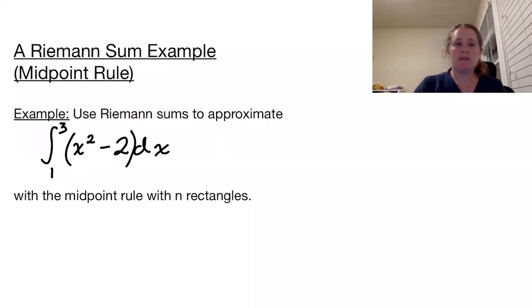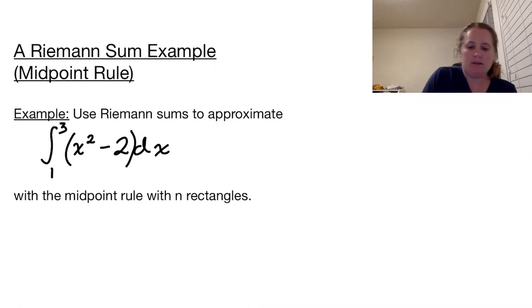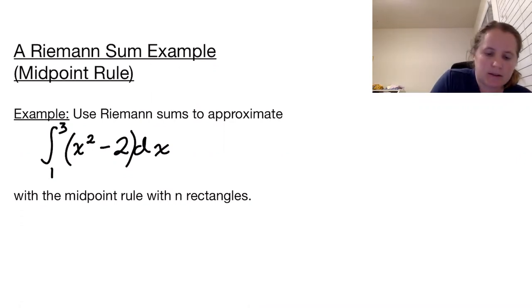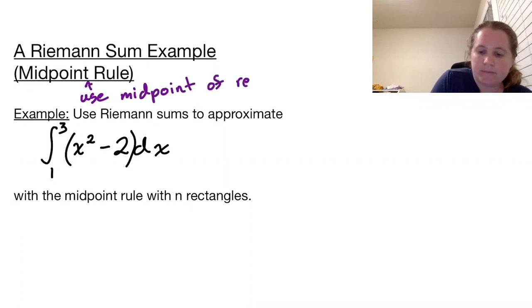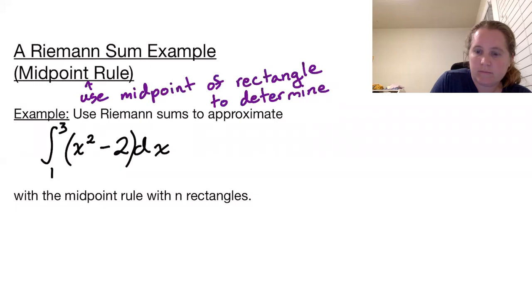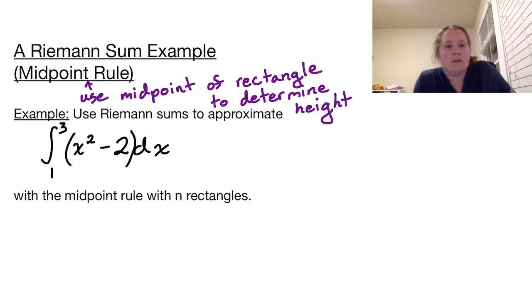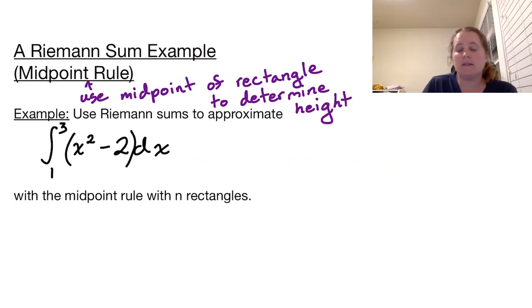Welcome to a Riemann sum example with the midpoint rule. The midpoint rule says we use the midpoint of the rectangle to determine height. We are looking at the definite integral from 1 to 3 of x squared minus 2 dx, and this time we're using the midpoint rule, still working with n rectangles.